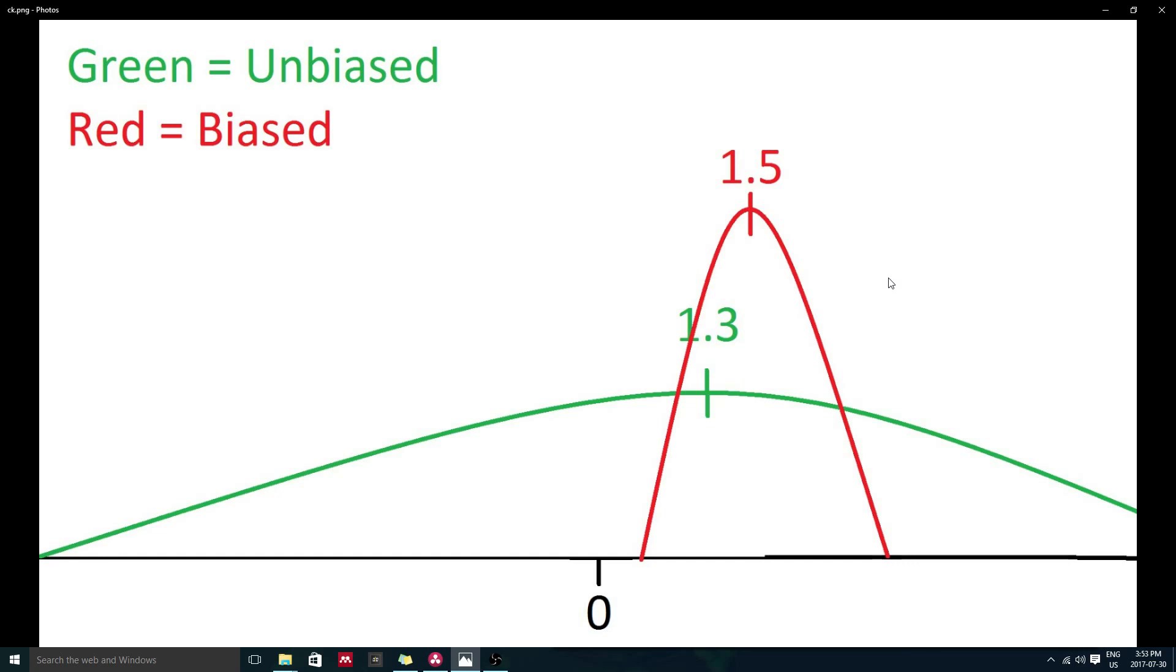So, maybe this biased estimator points to 1.5, which is not the true parametric value of our regression coefficient, but because of the way the probabilities work out, this biased estimator ends up being a better estimator than our unbiased one.